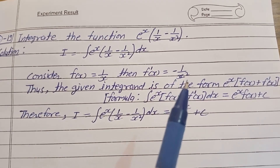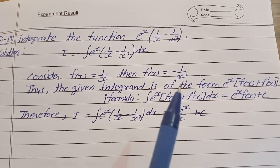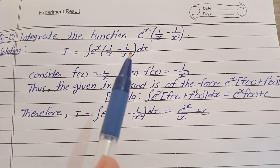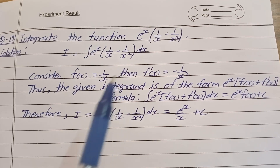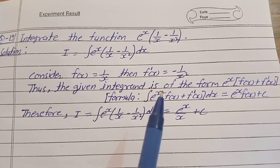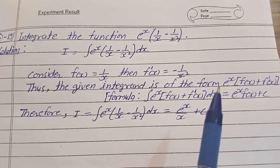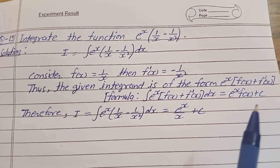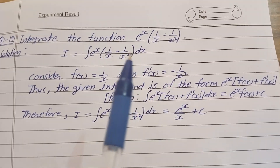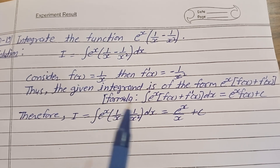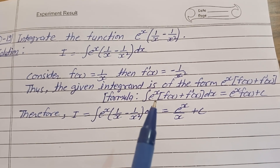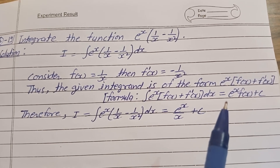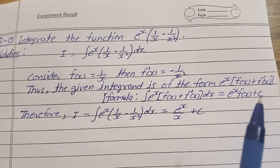This is the f of x and this is f dash x. Thus the given integrand is of the form e^x bracket f of x plus f dash x. We can directly use the formula: integration of e^x bracket f of x plus f dash x dx is equal to e^x f of x plus c.